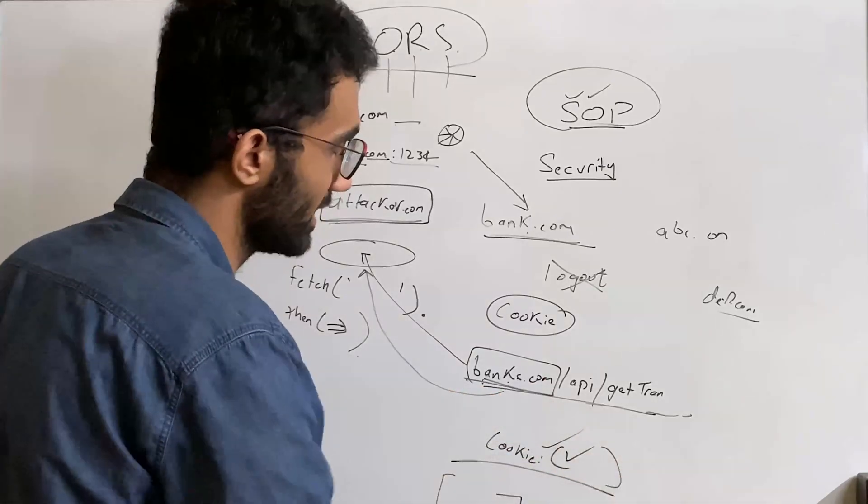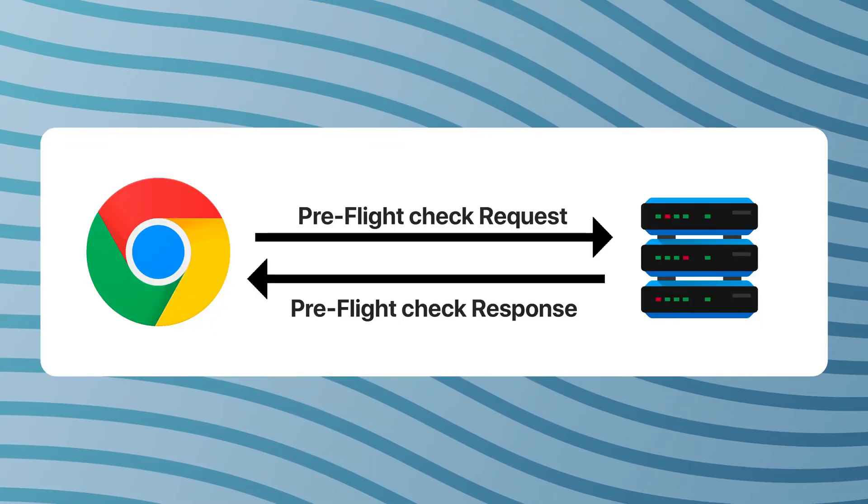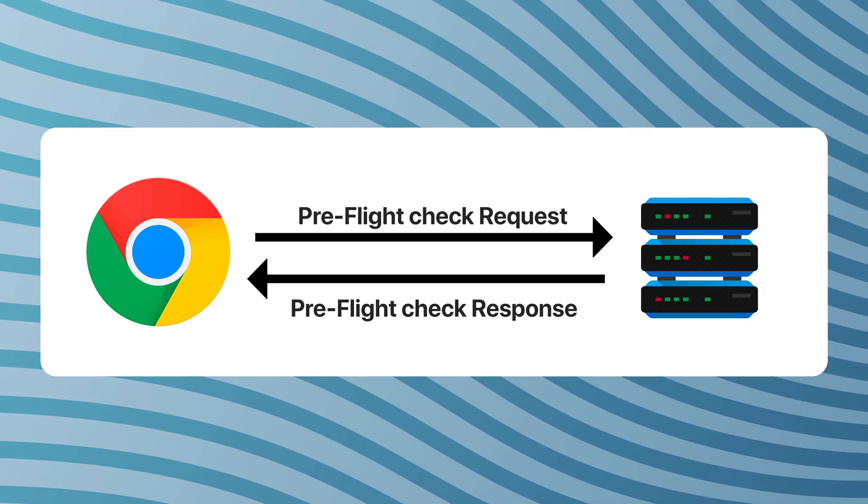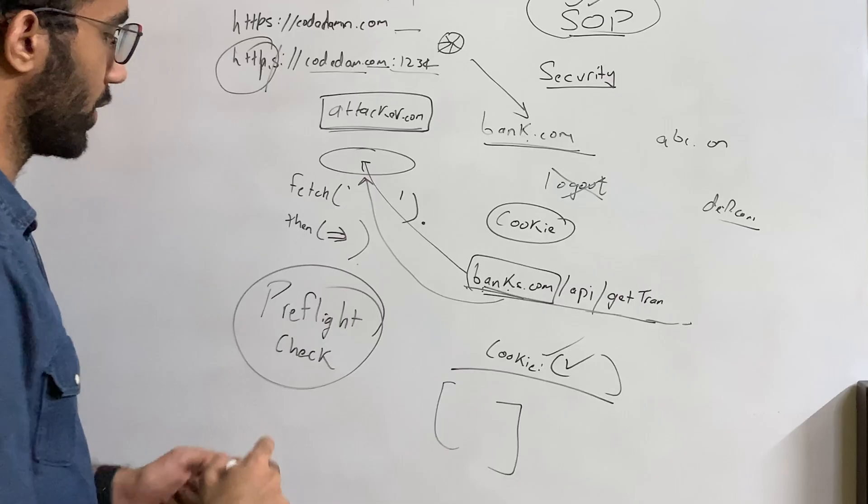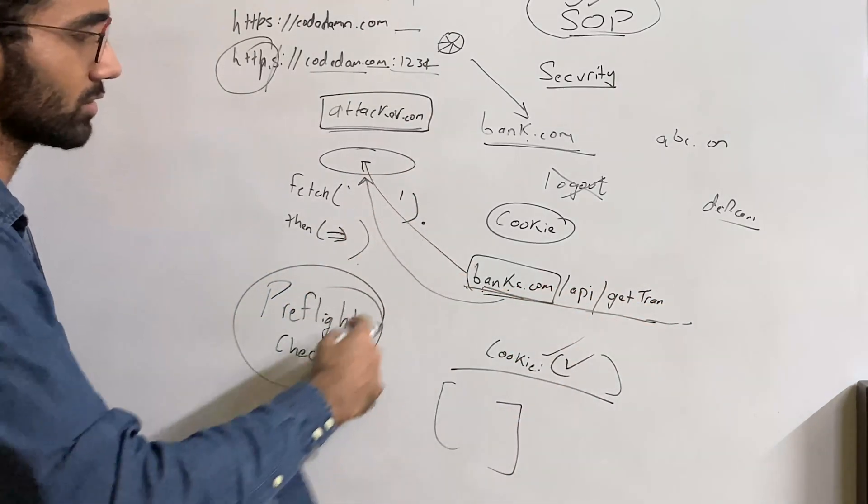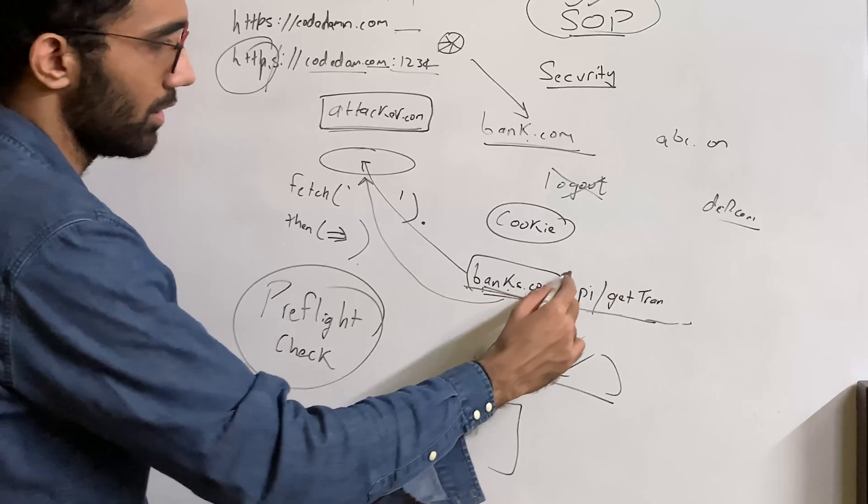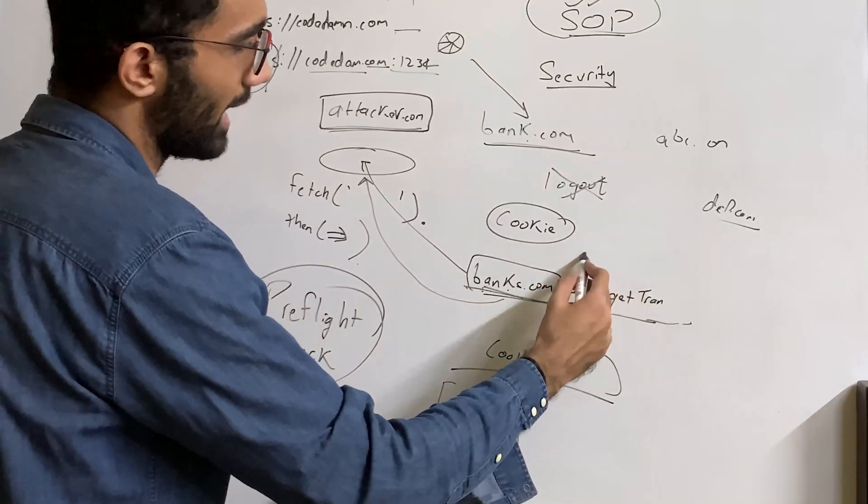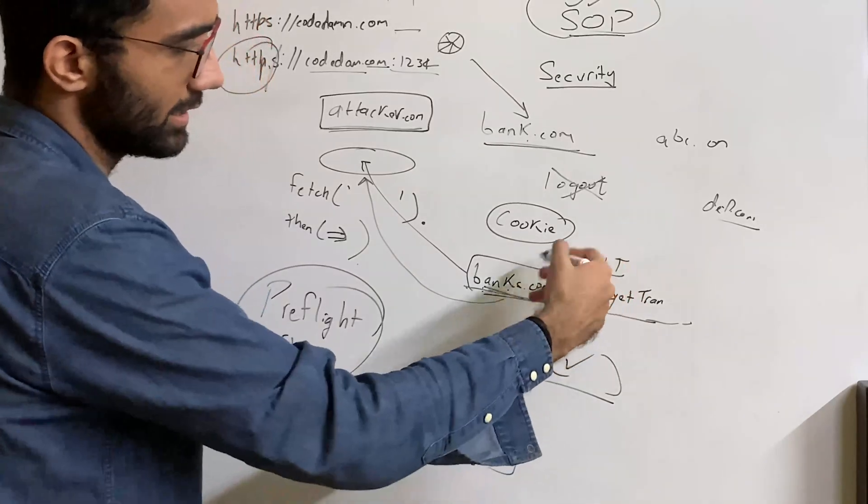Browser would say: hold on, before I actually make this request, let me go ahead and do a pre-flight check. This pre-flight check right here is super important because what browser does is that instead of performing the actual request, browser says I'm just gonna verify this once.